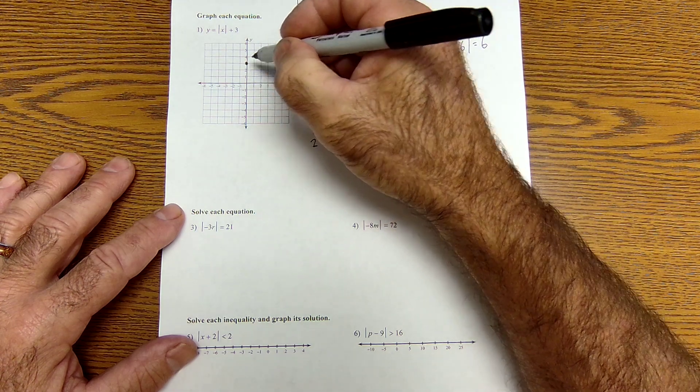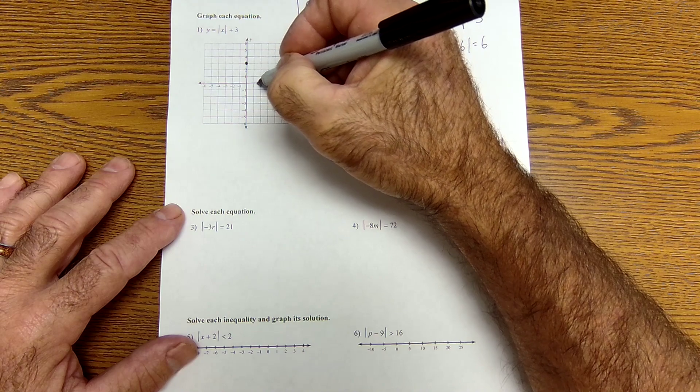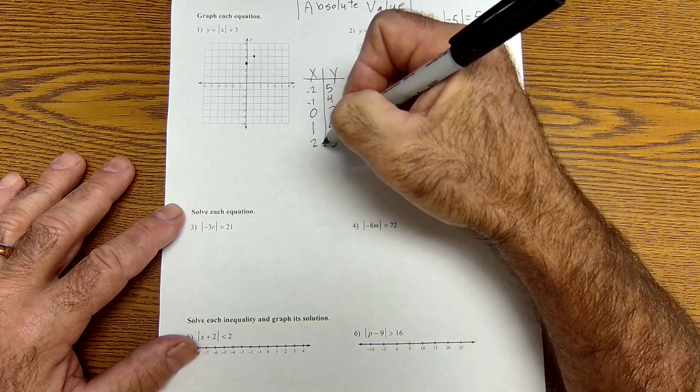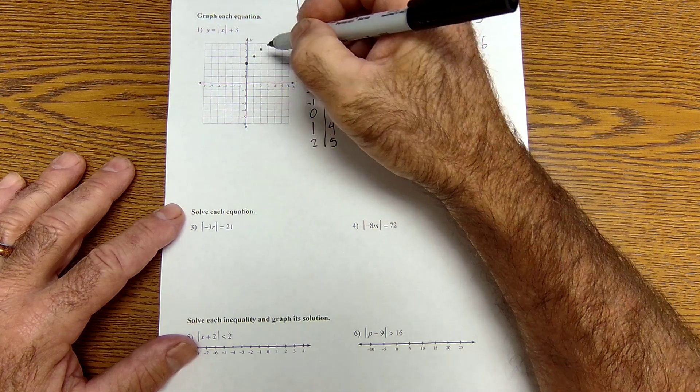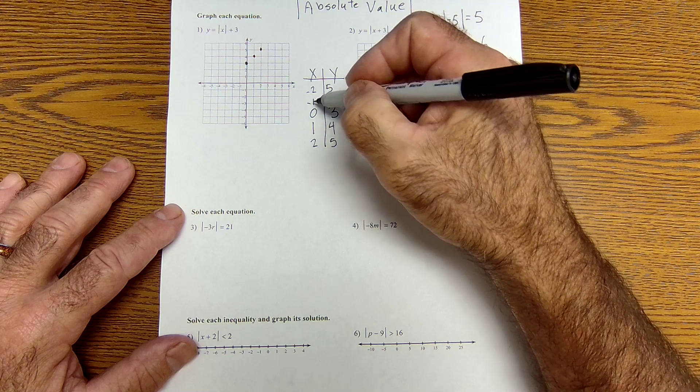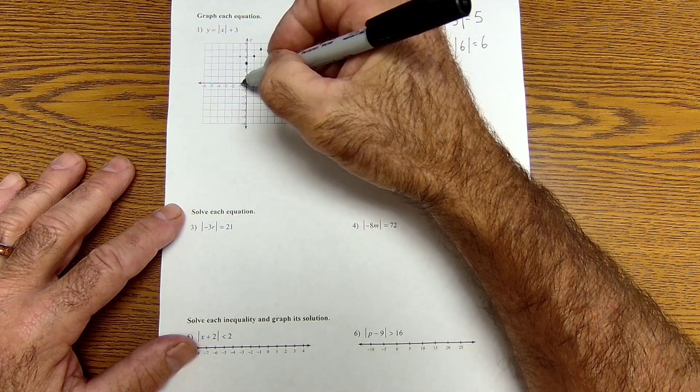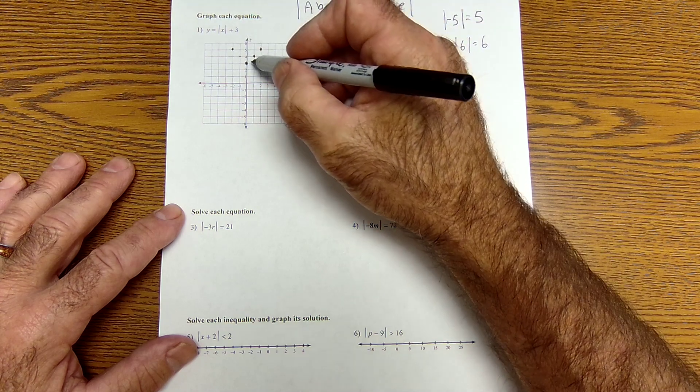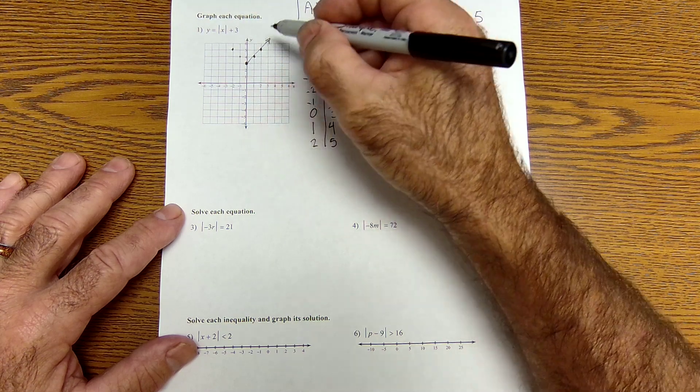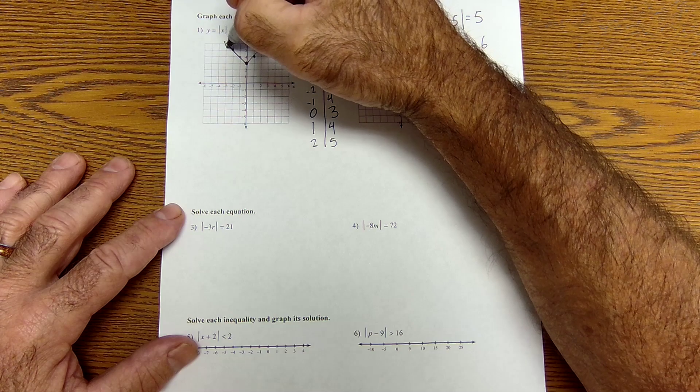I'm going to graph these points. I'm over 0, up 3. I'm over 1, up 4. Over 2, up 5. In the negative x department, I go over negative 1, up 4. Negative 2, up 5. And I could see the graph of this absolute value is a v-shaped opening up.